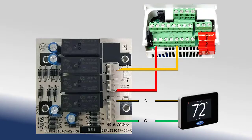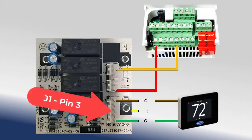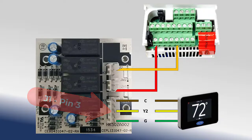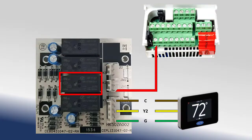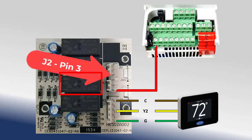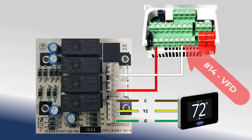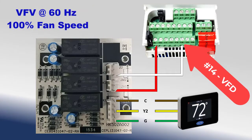During 2nd stage cooling, the Y2 signal is routed to the fan control board J1, pin 3. This closes the K2 relay. With the K2 relay closed, the 24-volt DC output at J2, pin 2 is de-energized. The output at J2, pin 3 is simultaneously energized and returned to the VFD at terminal 14, commanding the VFD to 60 Hz, or 100% of fan speed.